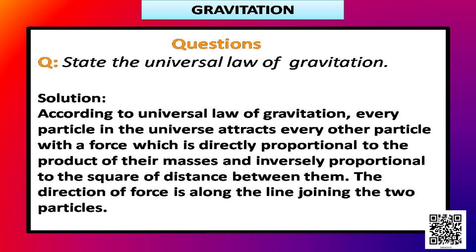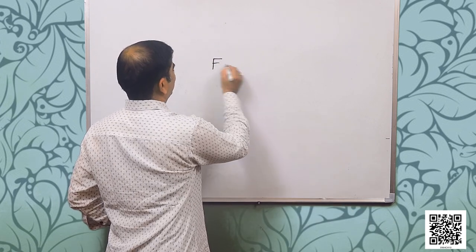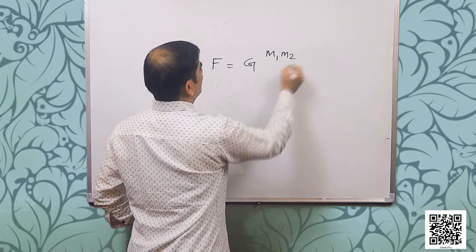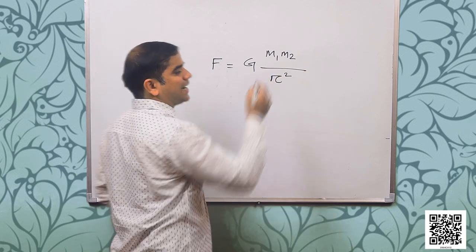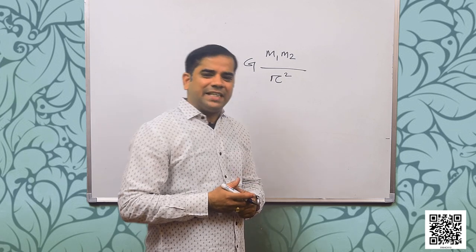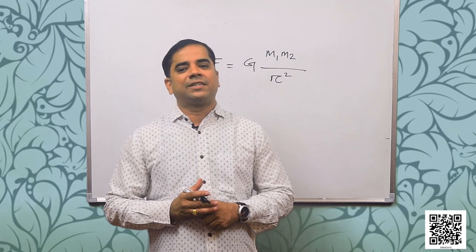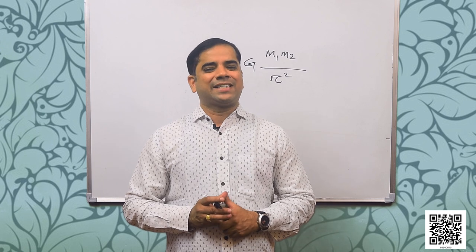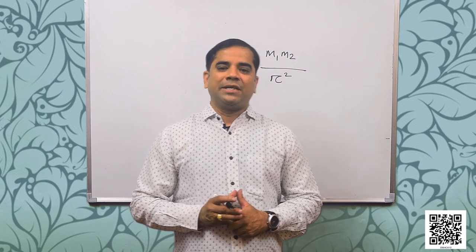The force acting between two objects is directly proportional to the product of their masses and inversely proportional to the square of the distance between their centers. For two objects of masses M1 and M2 and the distance between them R, the force F is given by F = G M1 M2 divided by R square, where G is the universal gravitational constant and its value is 6.67 × 10⁻¹¹ N m² kg⁻².